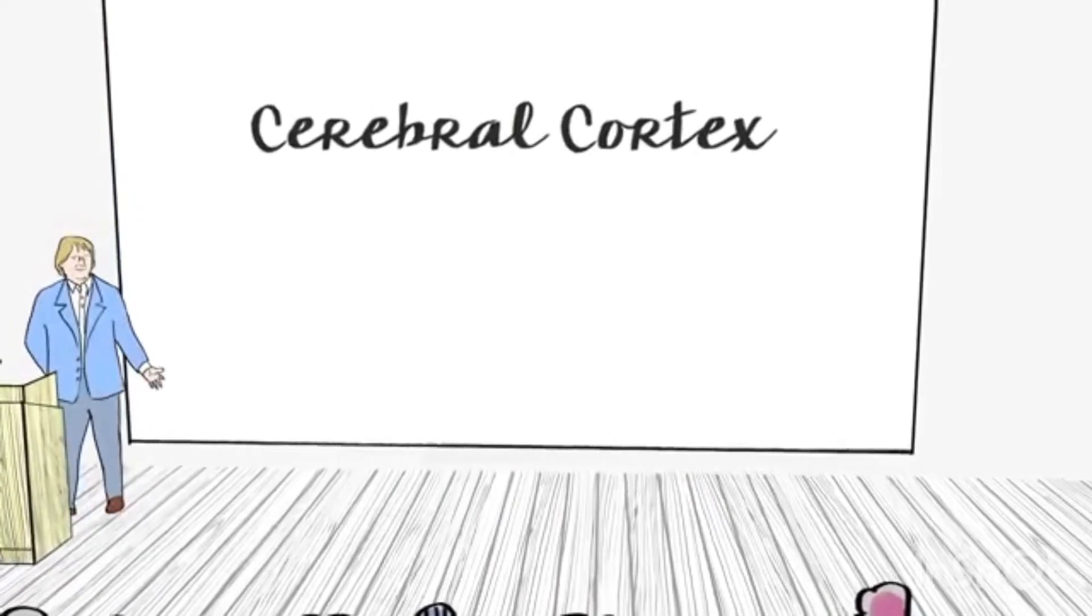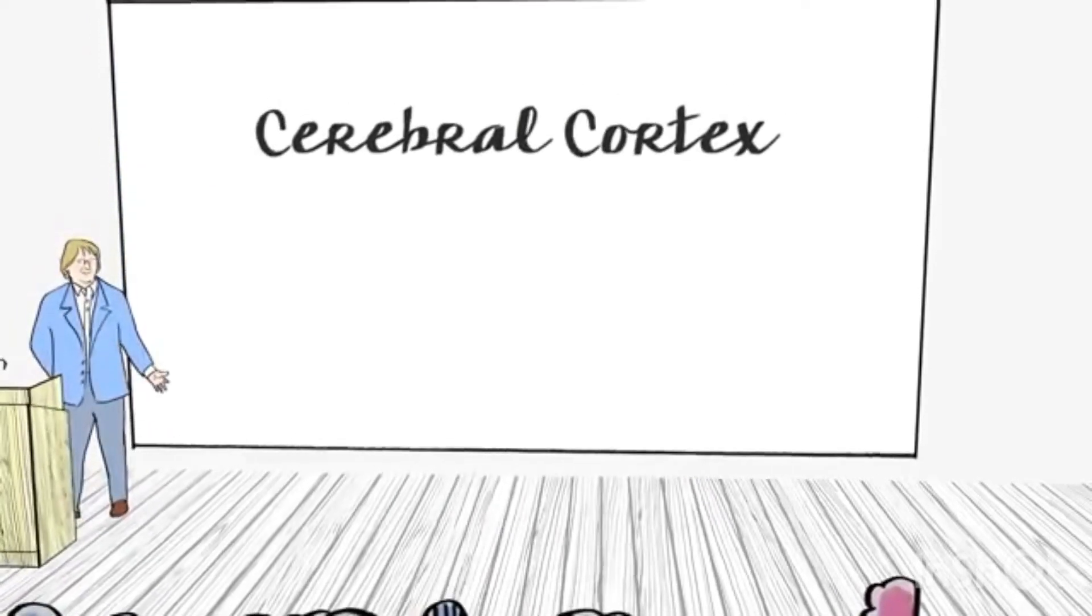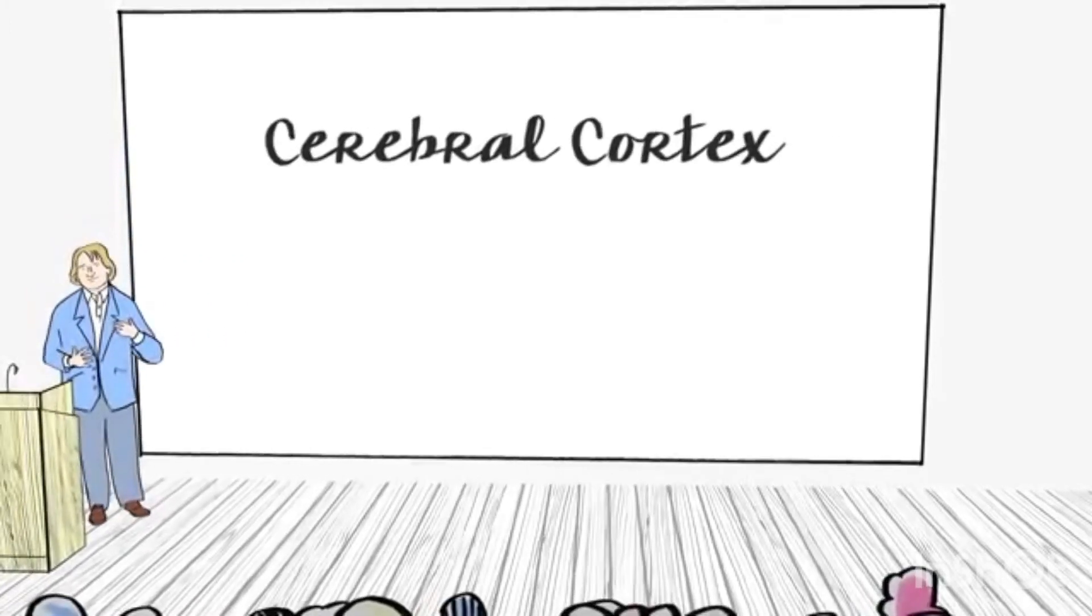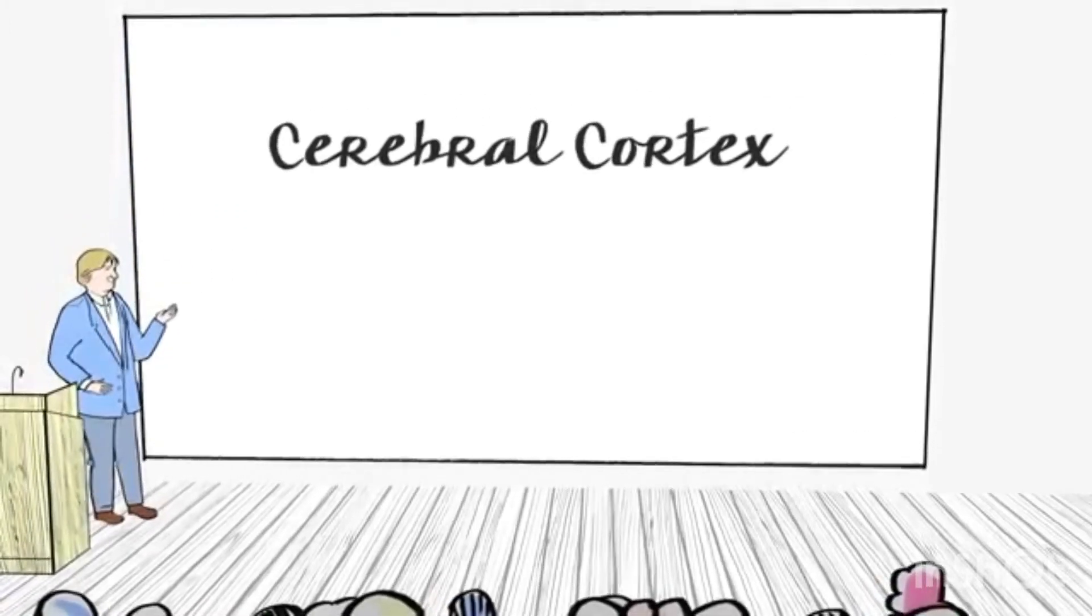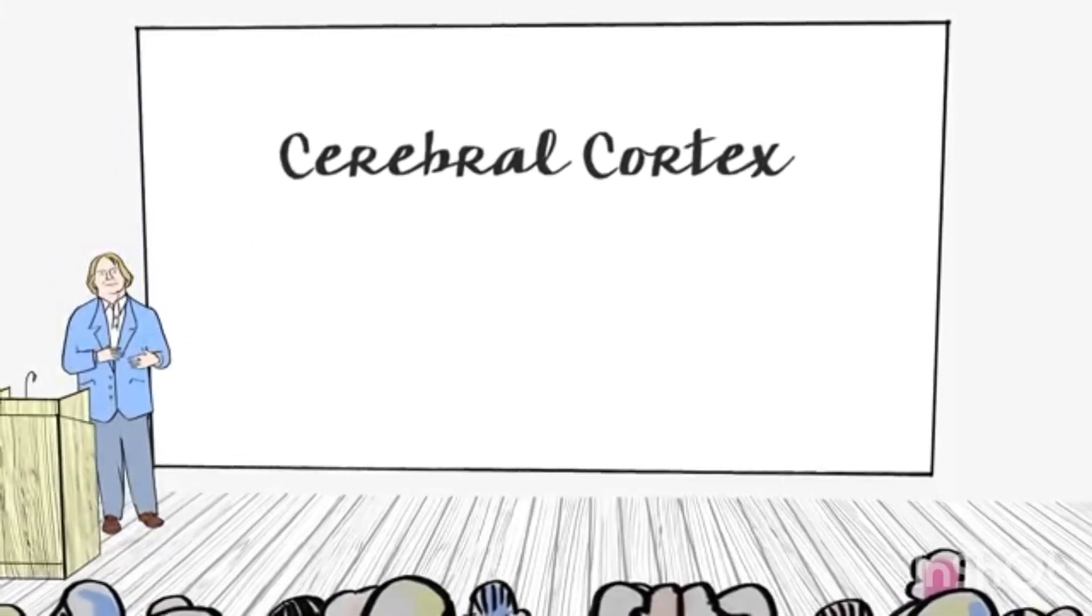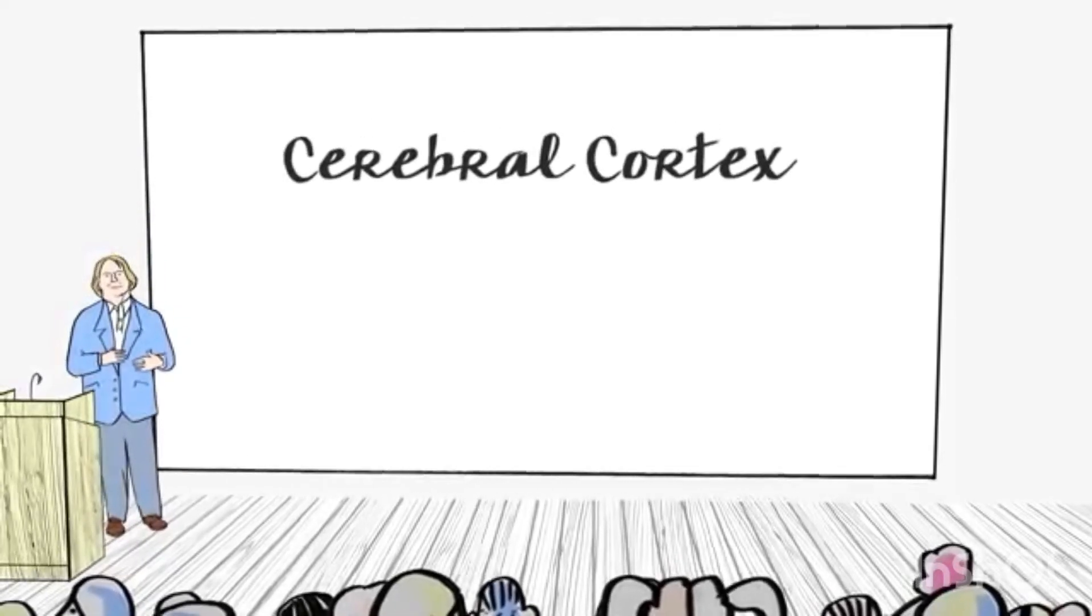Which damage to which parts of the brain corresponds to damage to which functions. Through these different methods, we've learned about the different parts of the brain and what they do. We could talk about some certain specific things that can go wrong due to brain damage or stroke or trauma.